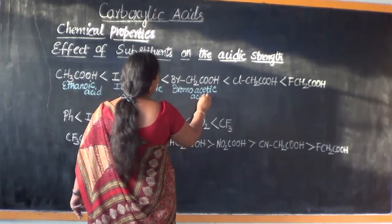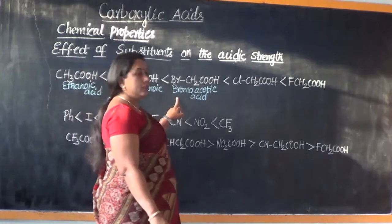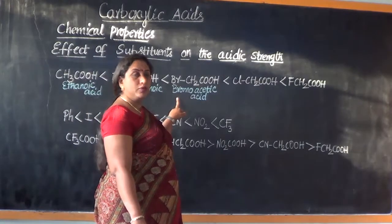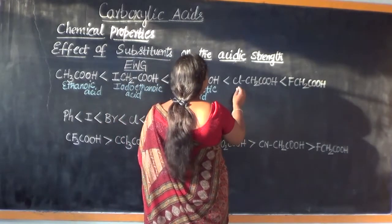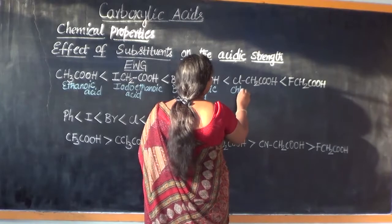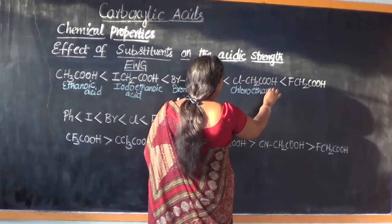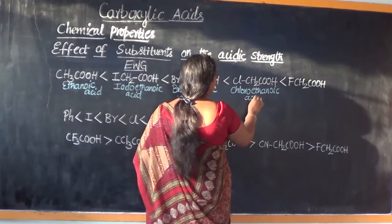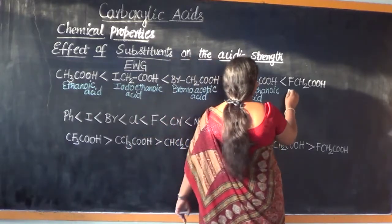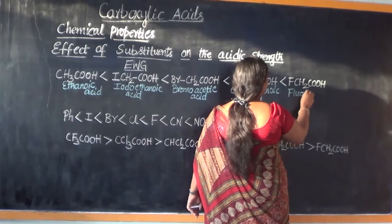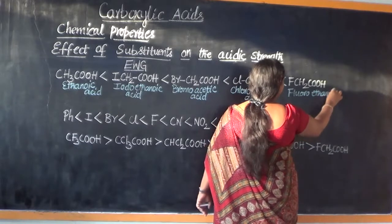Bromoacetic acid — or we can also call it bromoethanoic acid; bromoacetic acid is the trivial nomenclature. Bromoacetic acid is less acidic than chloroacetic acid, or chloroethanoic acid.